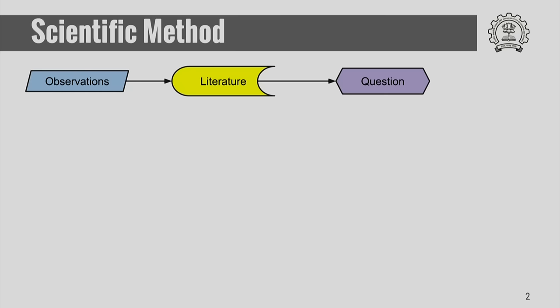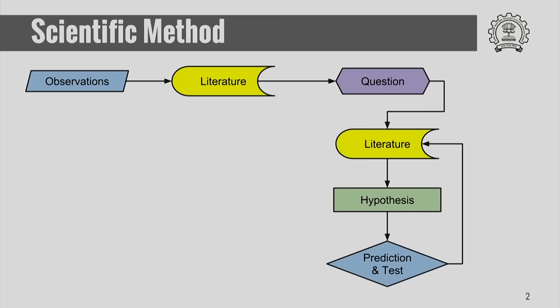Once you have defined the question, you again go back to the literature and see what has been done so far and what else can be done. Based on the knowledge you gain from the literature, you come up with a hypothesis and proceed with your work, arriving at a prediction, a set of experiments, or a theoretical solution.